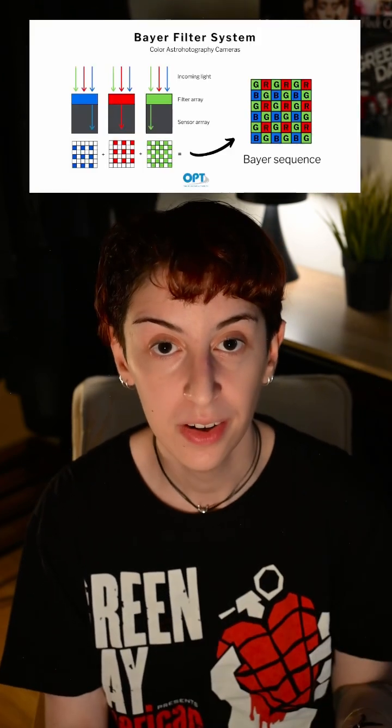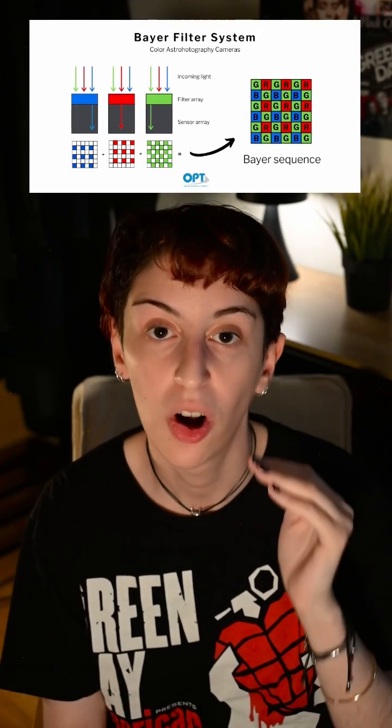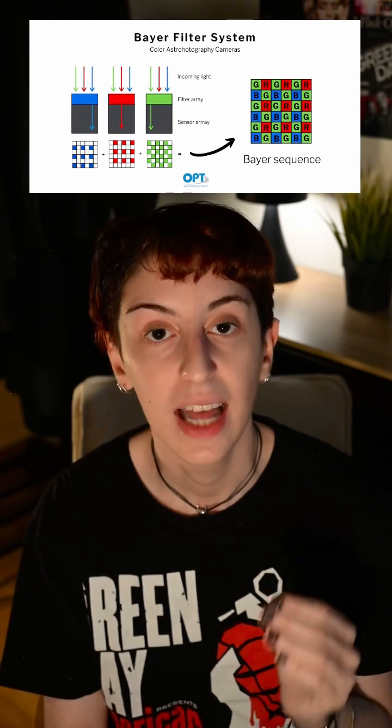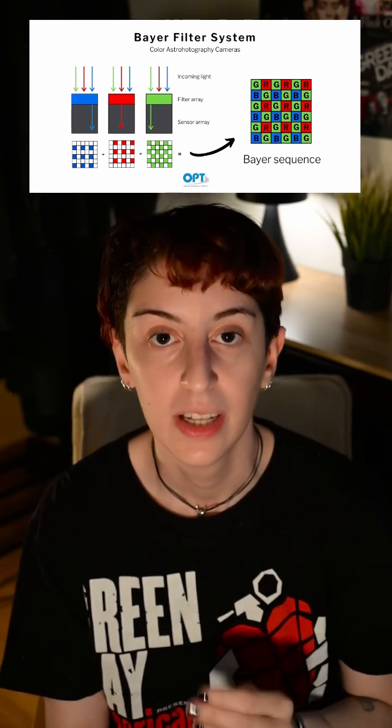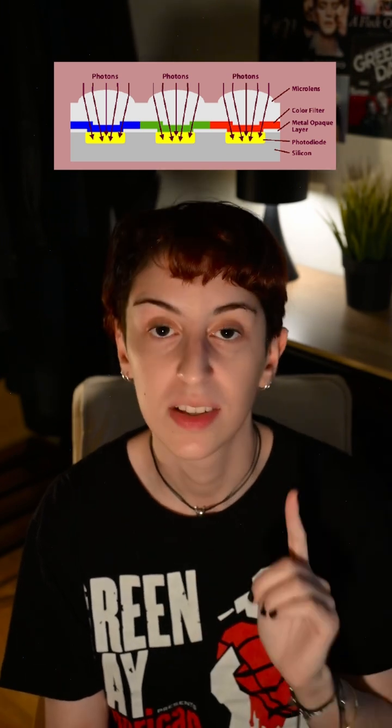Moving on to CMOS, which stands for complementary metal oxide semiconductor. These are the newer sensors used in all modern digital cameras, including your phone. These use a Bayer pattern, which is a pattern that goes on the pixel grid of the sensor and is composed of three colors — green, blue, and red. There are two times as many green pixels as any other color, because these are the sensors we have more of in our eyes and the color that also appears more naturally in the environment around us.